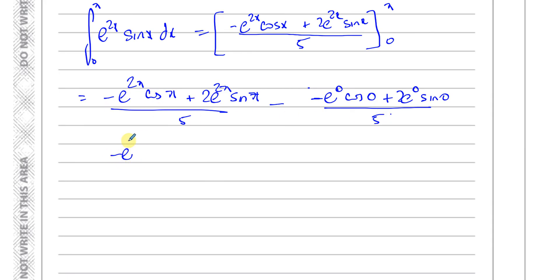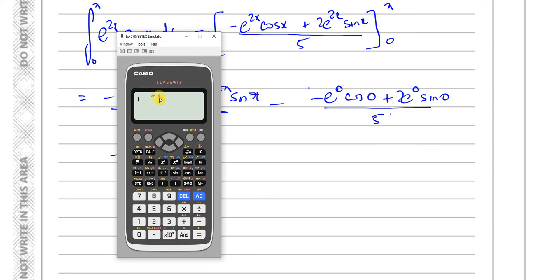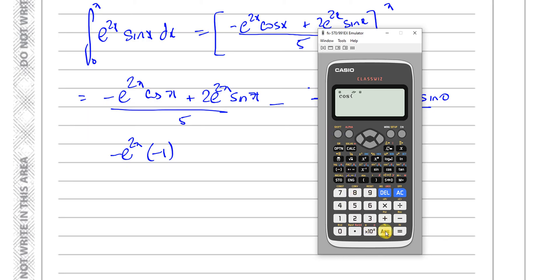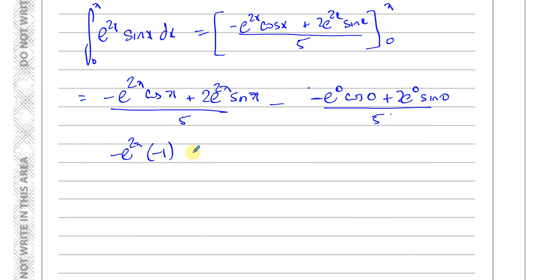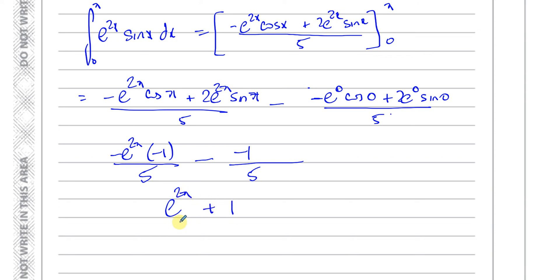Now cosine π equals minus 1, and sine π equals 0. So the upper limit term becomes: minus e to the power of 2π times minus 1 plus 0, giving e to the power of 2π over 5. At the lower limit: e to the power of 0 is 1, cosine 0 is 1, sine 0 is 0. So that term becomes minus 1 over 5. Therefore the area equals e to the power of 2π plus 1, all over 5.